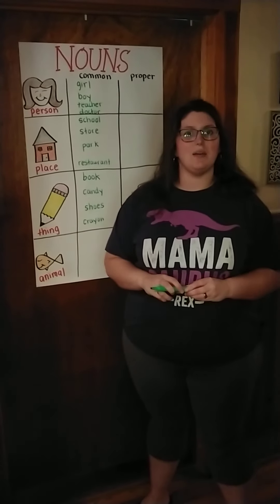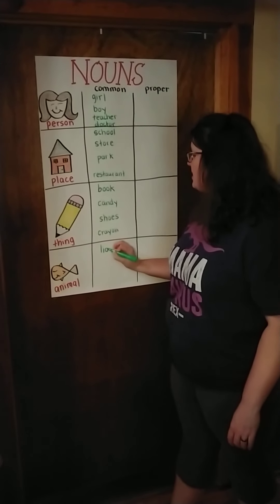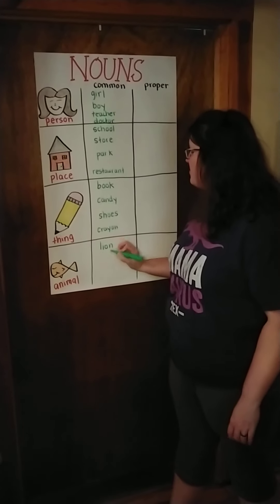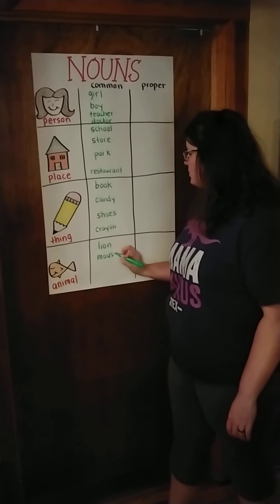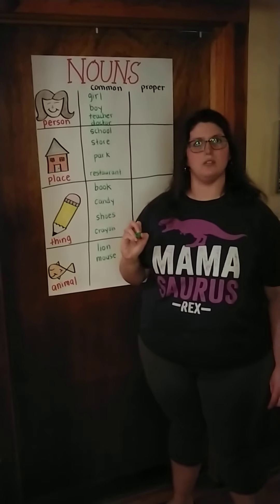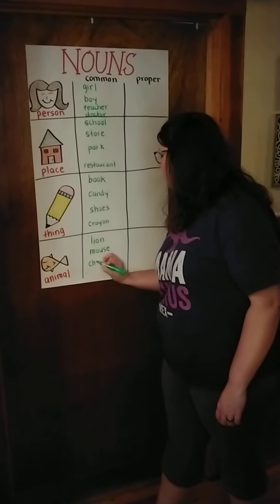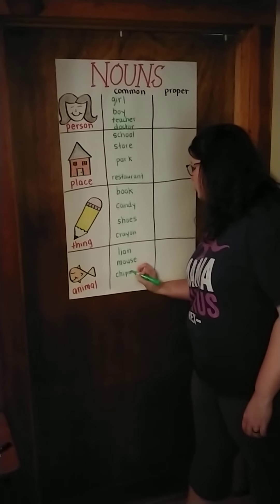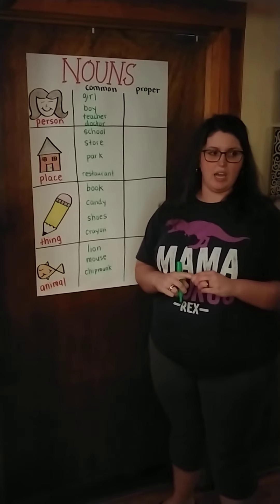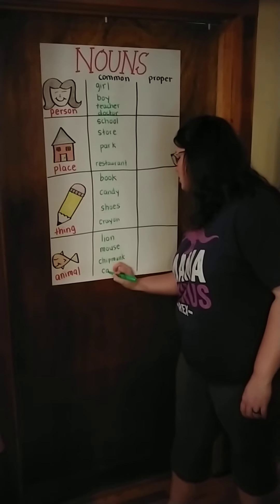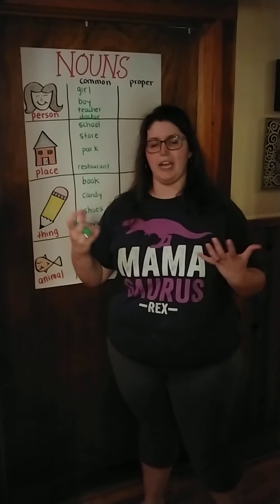So let's think about some animals. How about a lion? Let's do a little one — a mouse. Think of some more, there are lots of animals. How about a chipmunk? I like little chipmunks. And then let's do a cat. You could do dog, bird — any of those.